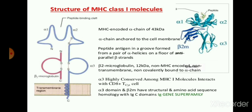Basically these MHC molecules are differentiated into two classes — MHC class 1 and MHC class 2. First, let's see the MHC class 1 molecules. In the structure you can see the alpha 1 and alpha 2 structures. The MHC-encoded alpha chain is about 43 kilodaltons. We know that the kilodalton is a scale for measuring protein.